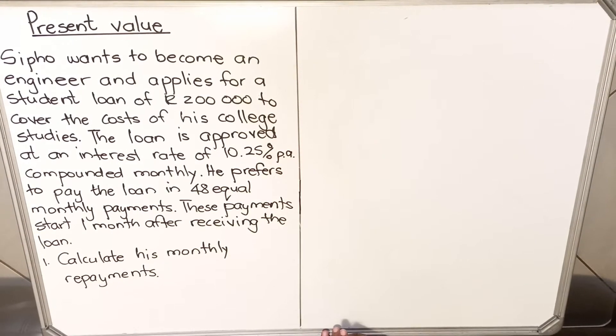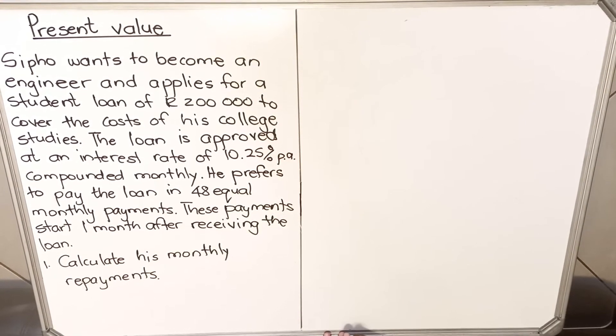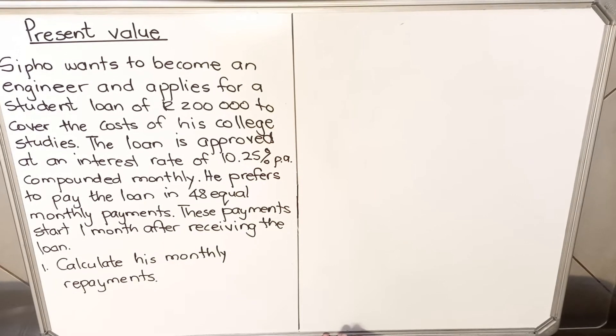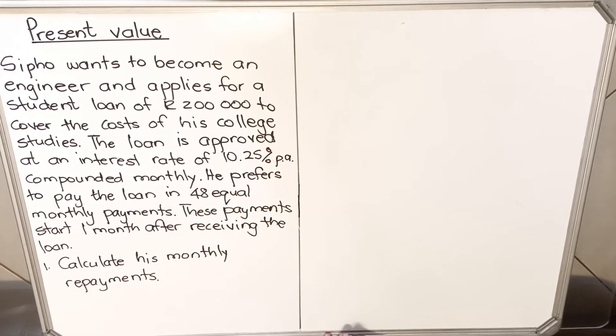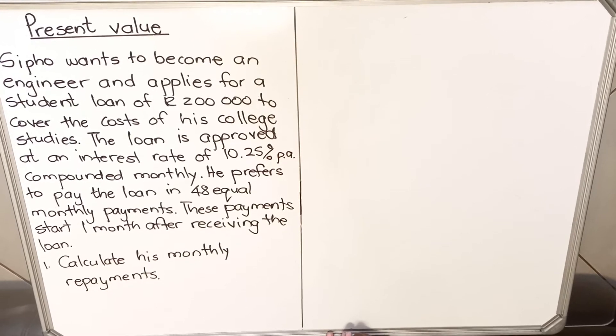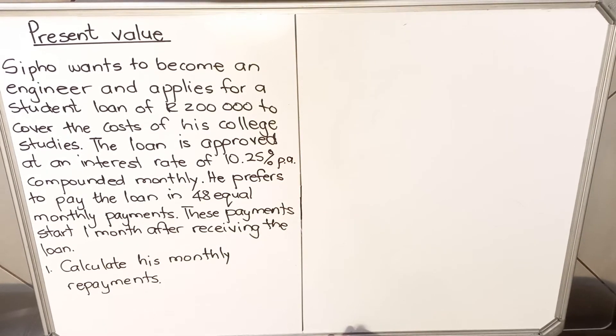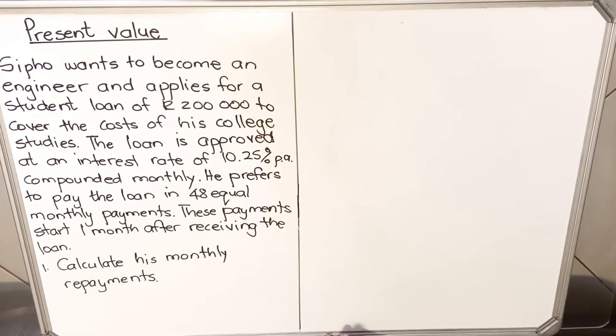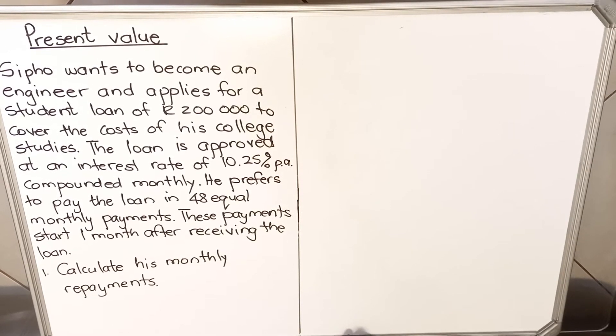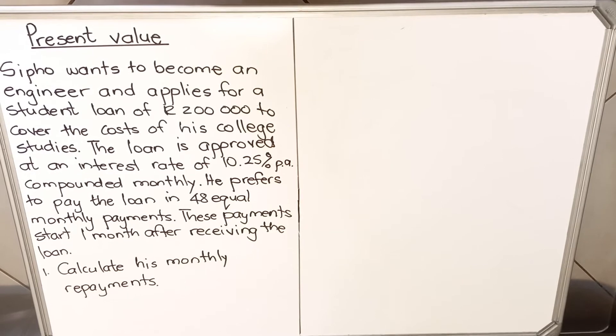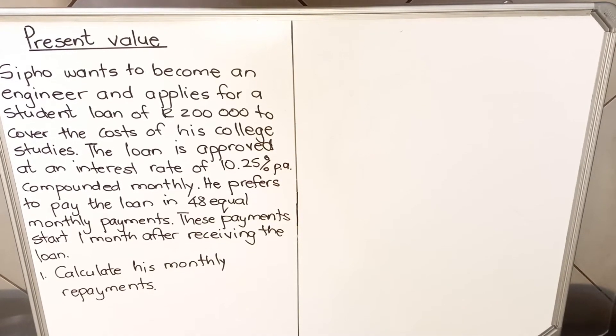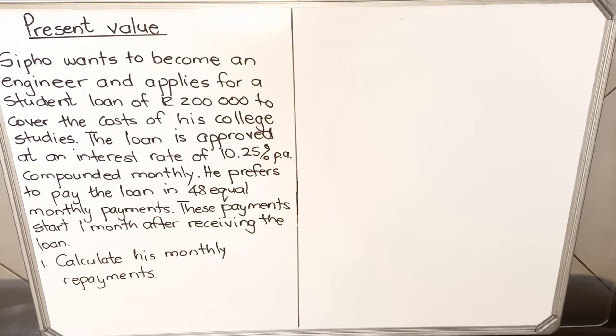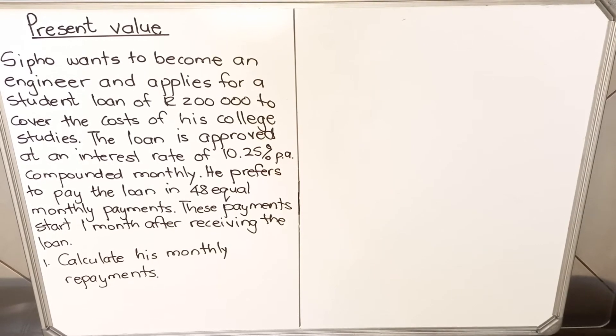Sipo wants to become an engineer and applies for a student loan of R200,000 to cover the cost of his college studies. The loan is approved at an interest rate of 10.25% per annum compounded monthly. He prefers to pay the loan in 48 equal monthly payments. These payments start one month after receiving the loan. The question is calculate his monthly repayment. With this section, because it's a story, you can't read it once. You have to read it the first time to get what the story is about, then read it the second time and write what you are given, then the third time calculate.